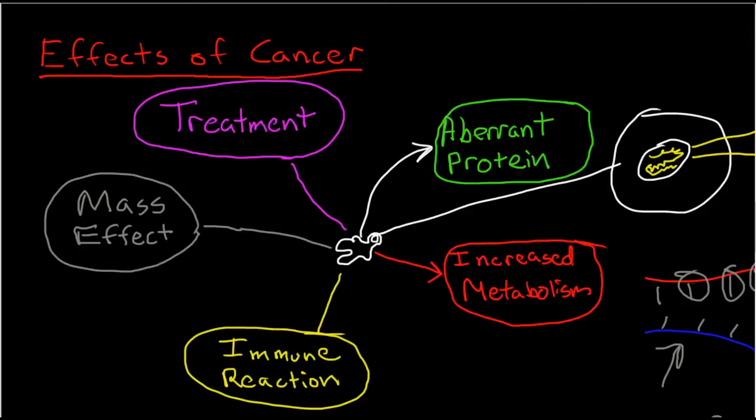Hello, this is Andrew Wolfe. This is my second video on the effects of cancer. In the first video, I talked about aberrant proteins and how the creation of aberrant proteins because of all the mutations in cancer cells causes all sorts of problems.